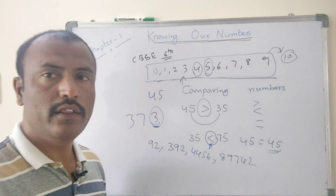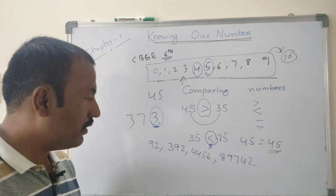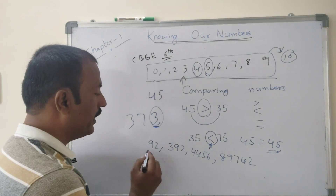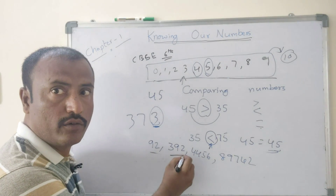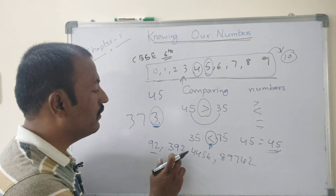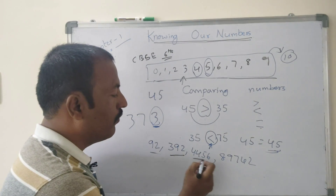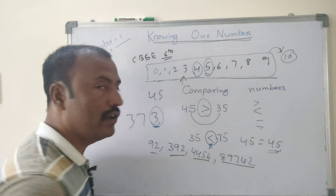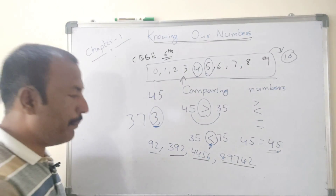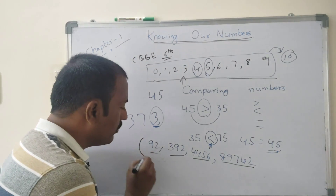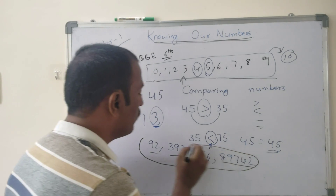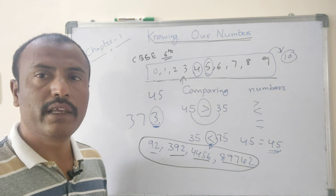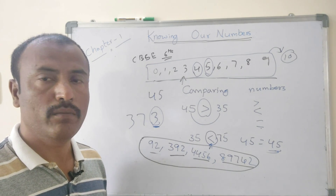In these numbers — 92, 392, 456, 8, 9, 7, 4, 2 — what are the numbers in this series? We need to find out the biggest as well as the smallest number among this series.